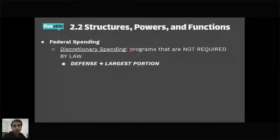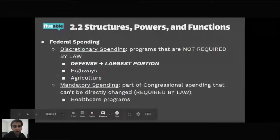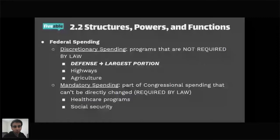After a bill reaches the president's desk, there are options for federal spending to consider alongside policy. Discretionary spending means the program is not required by law — the largest portion is defense, including military aid. Highways and agriculture are also discretionary spending. Mandatory spending means it's required by law — things like healthcare programs and Social Security are mandatory, so Congress must guarantee funding.